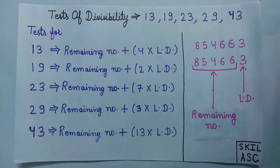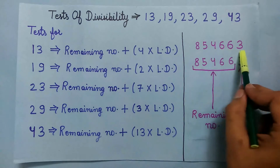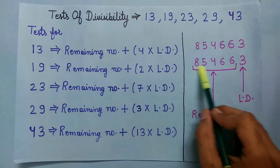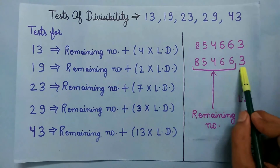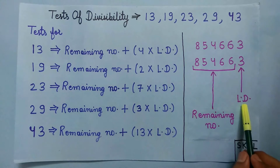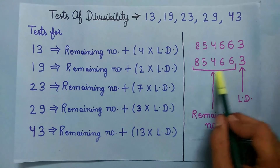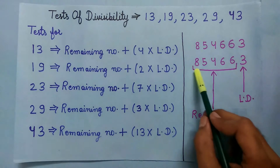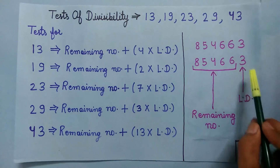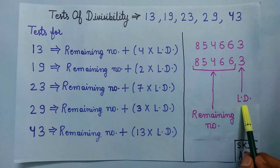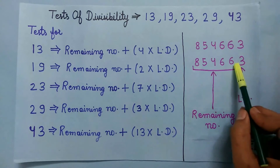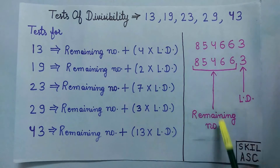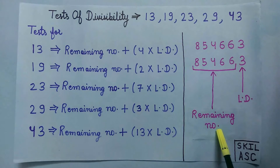First of all, let's take any number. In this number, this is the last digit and this is the remaining number.